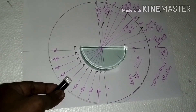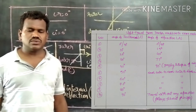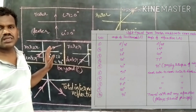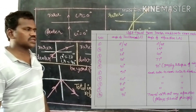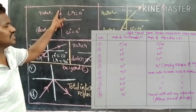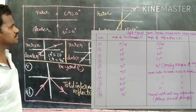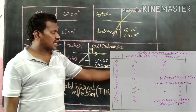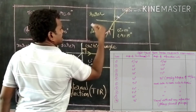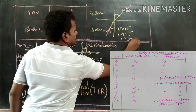We can explain this clearly through a table and on the board. We already did the activity, and from the activity we got the table. From the table we are going to draw graphical representations. In case 1, angle i is equal to 0 and angle r is also 0, meaning when the light ray strikes the surface at 90 degrees there is no refraction, whether traveling from denser to rarer or rarer to denser. In the second case, angle i is 10 degrees and angle r becomes 15 degrees, meaning the light ray deviates away from the normal when traveling from denser to rarer, and angle r is greater than angle i.